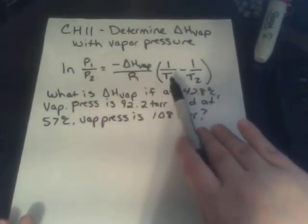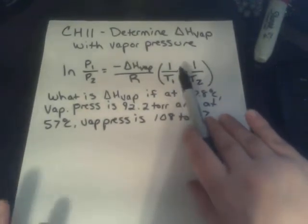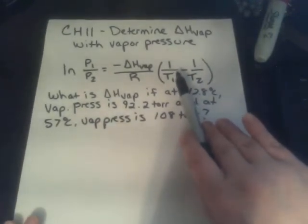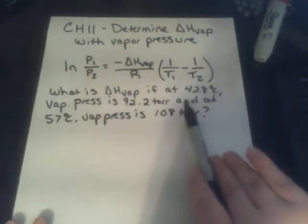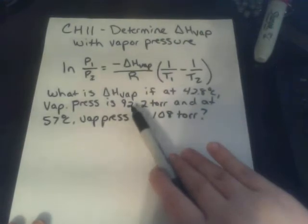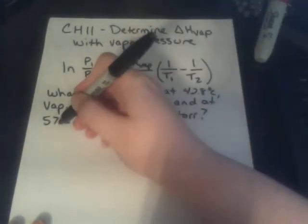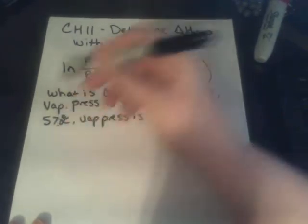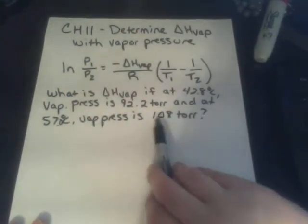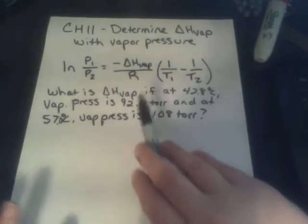As temperature increases, what happens to vapor pressure? Vapor pressure will increase, so it is a direct correlation. So we can actually see that with these numbers down here. At 42.8 degrees Celsius, the vapor pressure is 92. But if we increase it to 57.0, we have 108 torr. So the pressure increased when we increased our temperature.